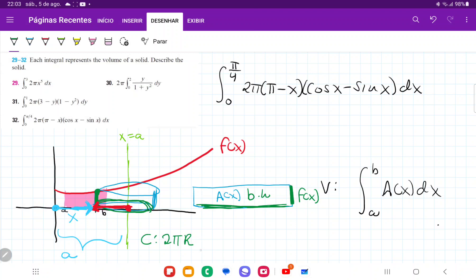So my radius, therefore, is going to be a minus x. And so this is going to be 2π times (a - x). Therefore, my area is equal to base times height, which is equal to 2π(a - x) times f(x).